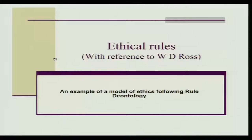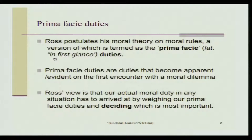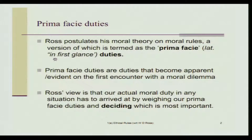Now we come to another example of rule deontology, that is W.D. Ross. Ross was a philosopher who tried to work out a deontological ethics with content — that is, he gave us certain duties. Ross postulates his moral theory on moral rules, a version of which is termed as prima facie, in Latin, which means 'at first glance.' Prima facie duties are duties that become apparent or evident on the first encounter with a moral dilemma. Ross's view is that our actual moral duty in any situation has to be arrived at by weighing our prima facie duties and deciding which is most important.